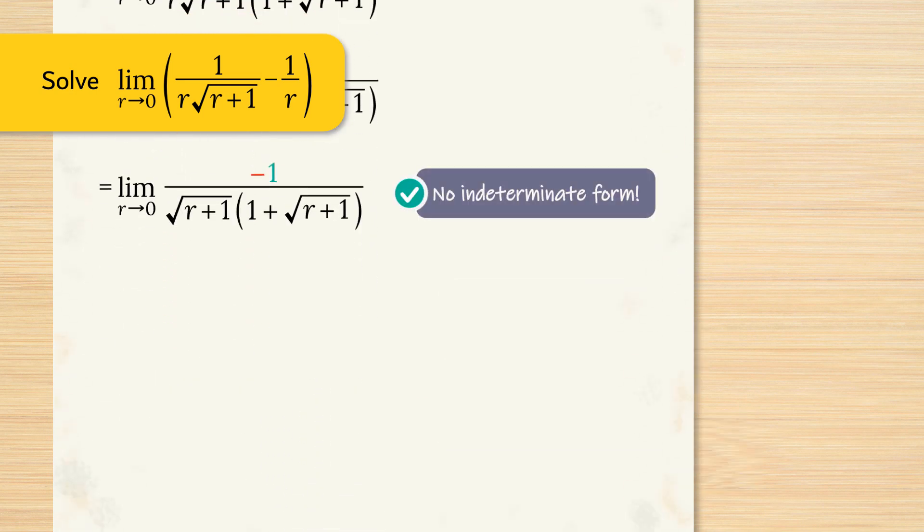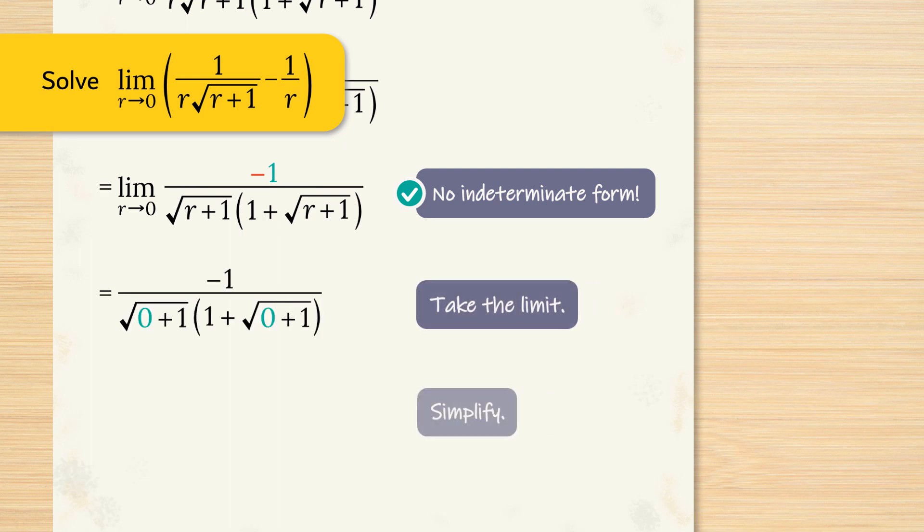We don't have any more indeterminate form. After cancelling that r, there's nothing that's making the numerator or denominator equal to 0 when r approaches 0. Let's take the limit. And simplifying, we have the limit negative 1 over 2.